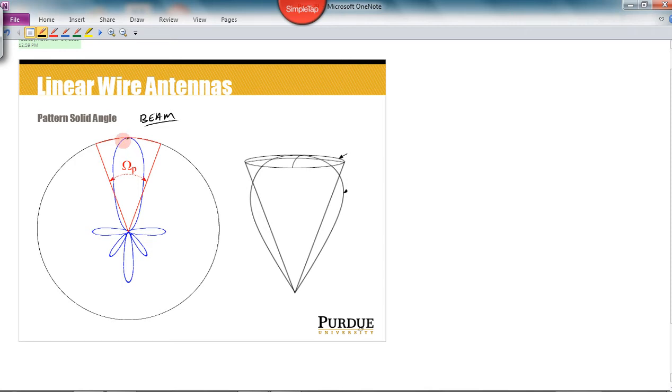And again, it's equal to this maximum value. And it's given the symbol pattern solid angle where beam solid angle is given the symbol capital omega sub p. And you can imagine that in three dimensions instead of an arc like I've shown here, the pattern solid angle forms a cone as I've pictured on the right-hand side.